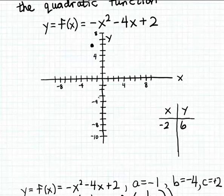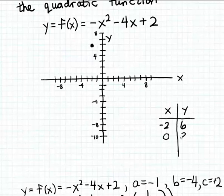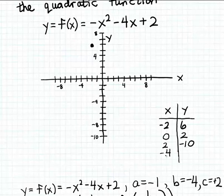To generate more points, I'll plug in additional input values for x into the function formula. When x = 0, that's the y-intercept, and the matching y-value is 2. When x = 2, the matching y-value works out to -10. When x = -4, the matching y-value is 2 again. And when x = -6, the matching y-value is -10. So we have at least five points on the graph of the parabola, including the vertex.